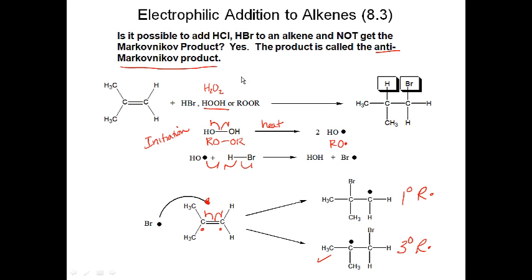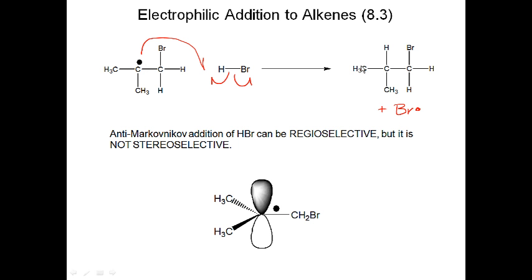The HBr bond breaks and the unpaired electron pairs with H to form the C-H bond, giving another Br dot that goes back and reacts with another alkene — exactly like free radical halogenation propagation. The key step is that when Br dot adds to the double bond, it adds to the carbon with the most hydrogens to generate the most stable radical, and then the hydrogen ends up on the carbon with the least number of hydrogens. So the major product is anti-Markovnikov.